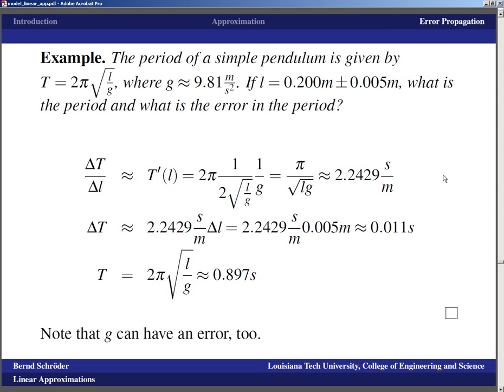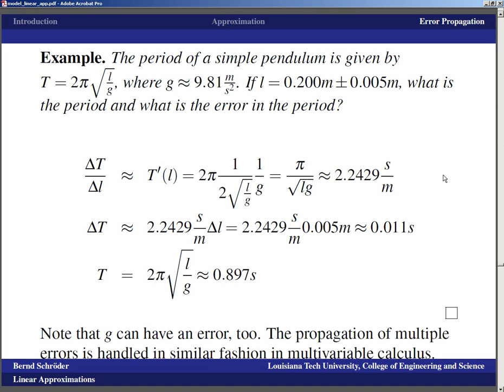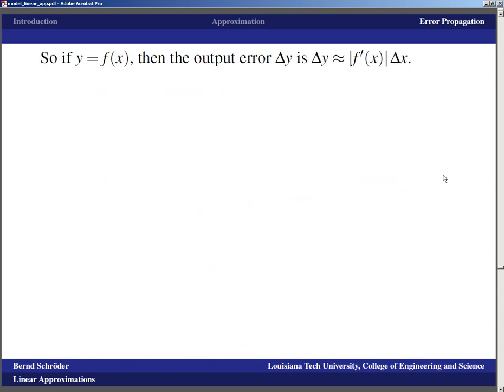We have to realize that g can have an error also because it's a measured value. It is not constant on earth. I think the gravitational acceleration is higher at the equator than it is at the poles, but I could be wrong on that right now. So g could have an error too. The propagation of multiple errors is handled in a very similar fashion in multivariable calculus. In terms of understanding the error, basically if y is equal to f(x), then the output error Δy is approximately f'(x) times Δx.